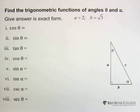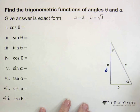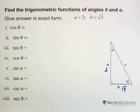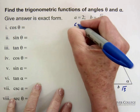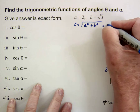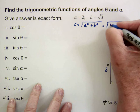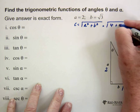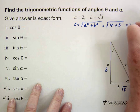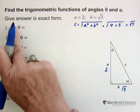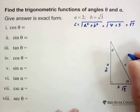Okay, so here we are. First thing we have to do is solve for C. We can see that we have A, which is 2, B, which is the square root of 3, and we need to find C. Remembering the Pythagorean theorem, we know that C equals the square root of A squared plus B squared. So we have the square root of A squared is 4, and B squared is the square root of 3 squared, which is 3. So we end up with C equaling the square root of 7. We leave it as the square root of 7 because that is an exact answer and we need our answers in exact form.